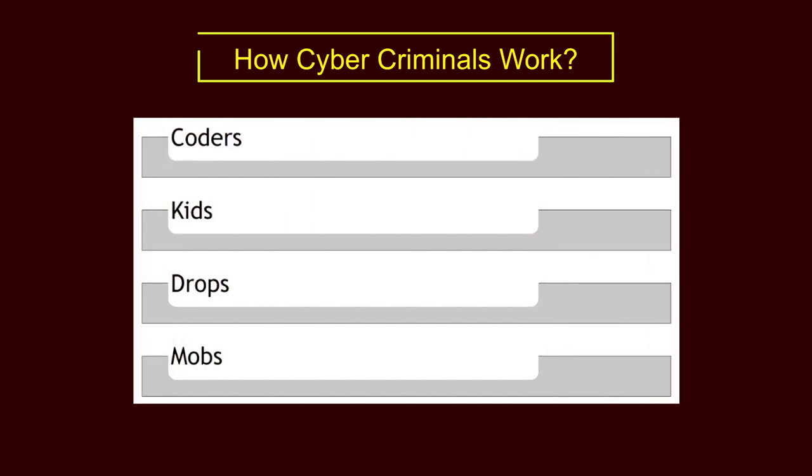Four types of entities are working in every cybercrime. These are coders, kits, drops, and mobs. We will see the activities of each entity in cyber criminal activities. First, we will discuss the activities of coders in cybercrime.